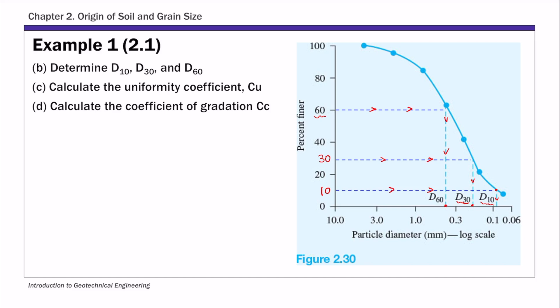So from this curve, you can get, for this example one, d10 is 0.09 millimeter, d30 from this curve is 0.185 millimeter, and d60 is about 0.41 millimeter. So that's part b, d10, d30, and d60.